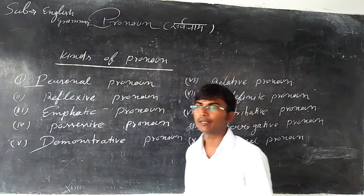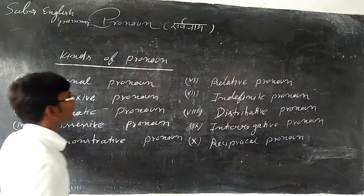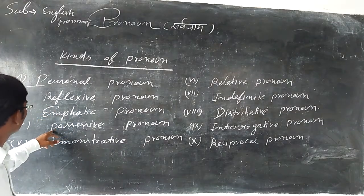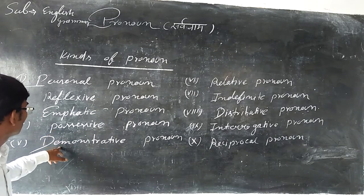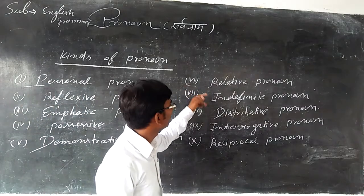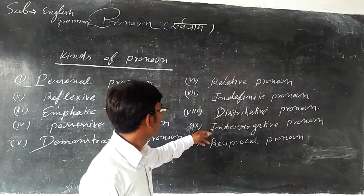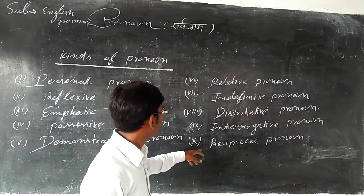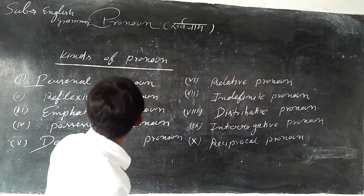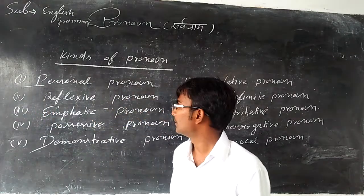Students, please see the kinds of pronouns. First is Personal Pronoun, second is Reflexive Pronoun, third is Emphatic Pronoun, fourth is Possessive Pronoun, fifth is Demonstrative Pronoun, sixth is Relative Pronoun, seventh is Indefinite Pronoun, eighth is Distributive Pronoun, ninth is Interrogative Pronoun, and tenth is Reciprocal Pronoun. In the next video, I will introduce Personal Pronoun, Reflexive Pronoun, and other pronouns.